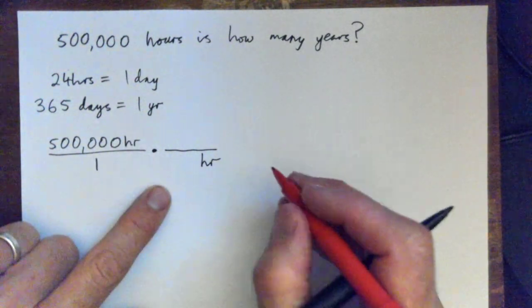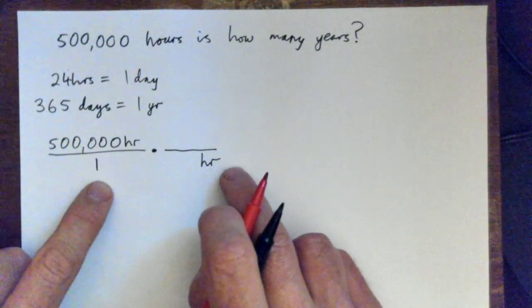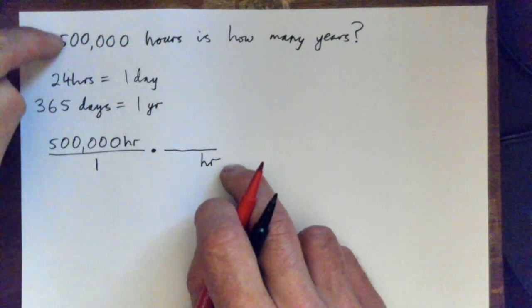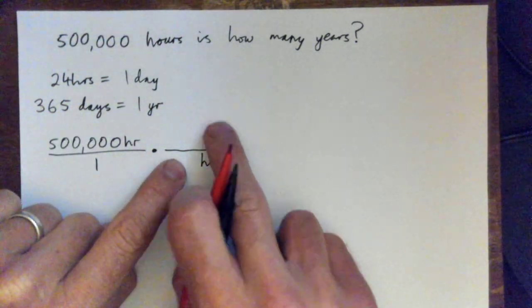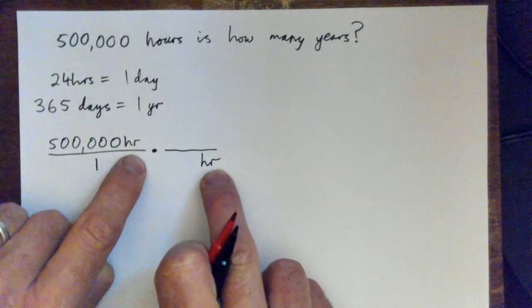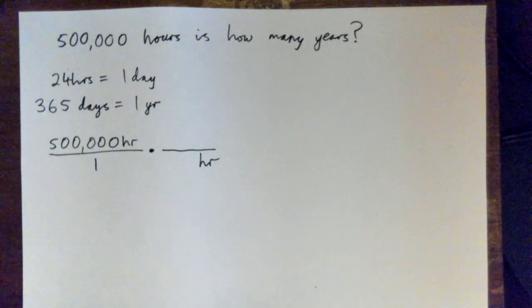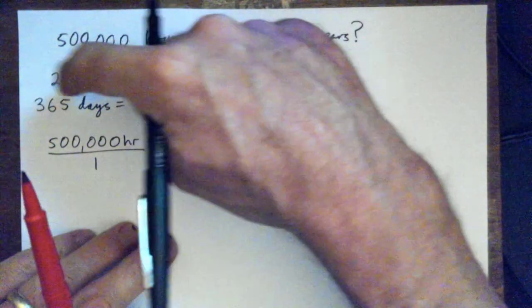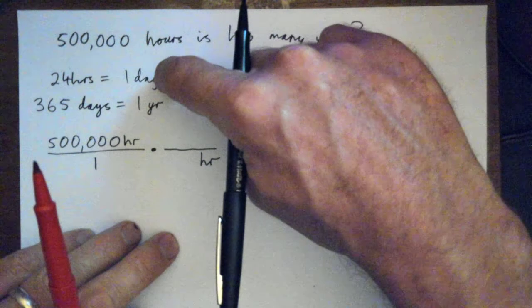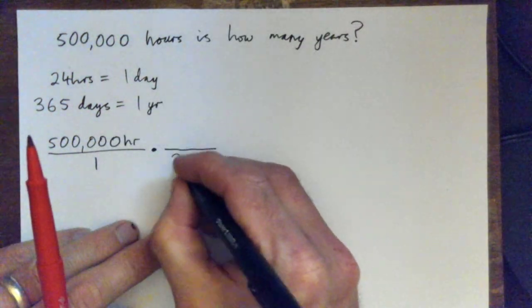You know, take your thing you're converting, put over one, multiply it by unit fraction with the arrow on the bottom. If you get that part, then the rest just falls into place. Because then you're like, okay, 24 hours equals one day, right? So you're just going to go, okay, 24 hours here and one day up here. Make sense?